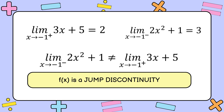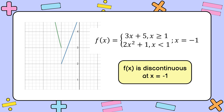Comparing the right-hand and left-hand limits: the limit of 2x squared plus 1 as x approaches negative 1 from the left is positive 3, and the limit of 3x plus 5 as x approaches negative 1 from the right is positive 2. Since both limits exist but are not equal, this is a jump discontinuity. The graph shows a jump between the two pieces at x equal to negative 1.